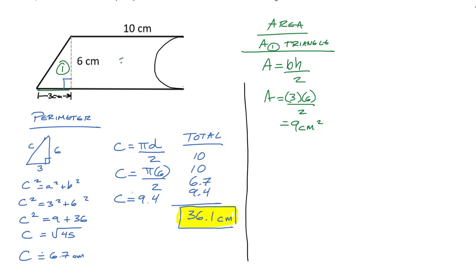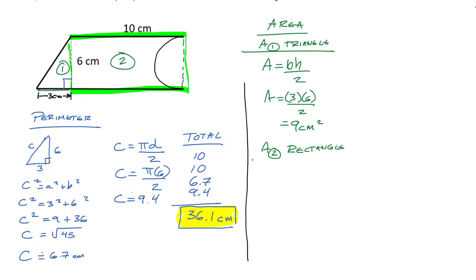Next is Area 2, the rectangle. Area of a rectangle is length times width — no need to look that up. We have 10 times 6 equals 60 centimeters squared.